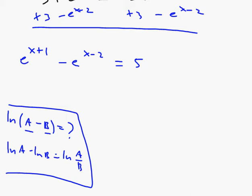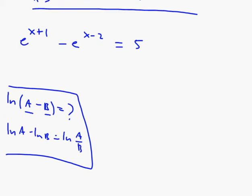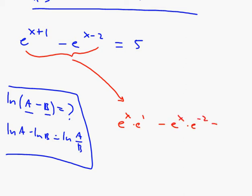What I do notice is there's a common factor here that has an x in it. So I'm going to rewrite this in a careful way — you have to decide that you agree with this. I'm going to rewrite the left side as e to the x times e to the 1 minus e to the x times e to the negative 2 equals 5.